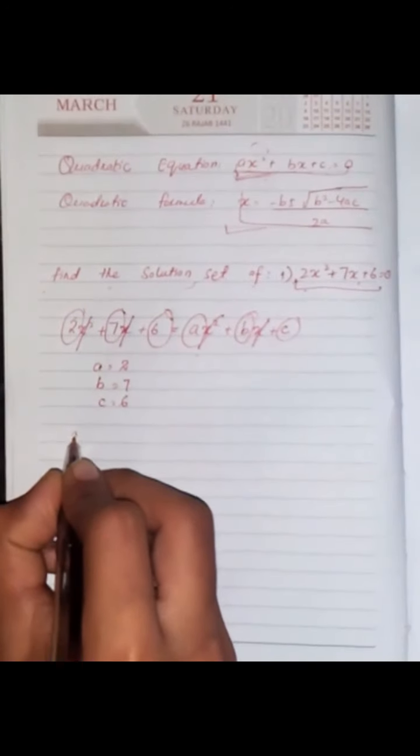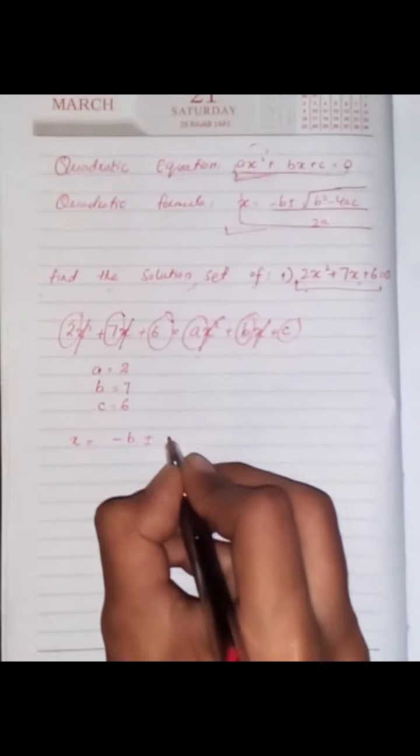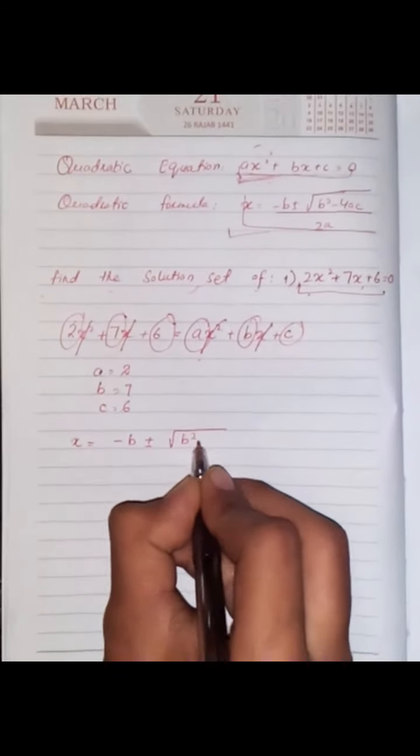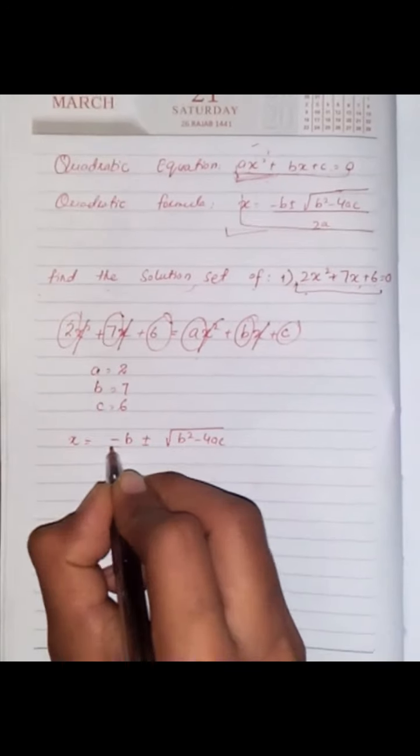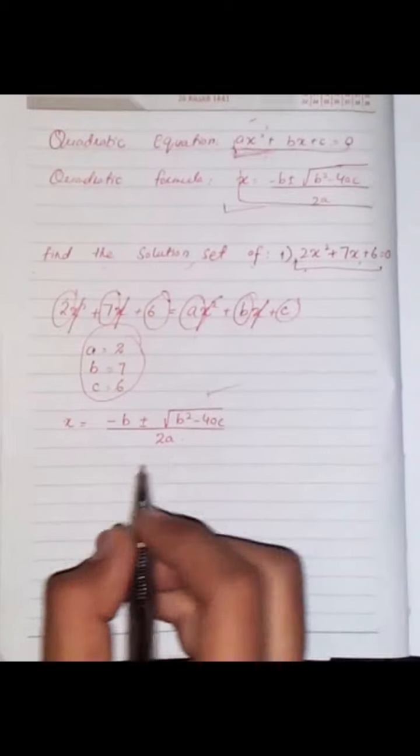Now by applying the quadratic formula: x = (-b ± √(b² - 4ac)) / 2a. Now put these values in this formula.